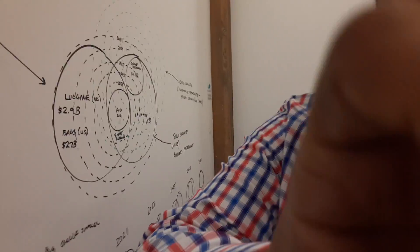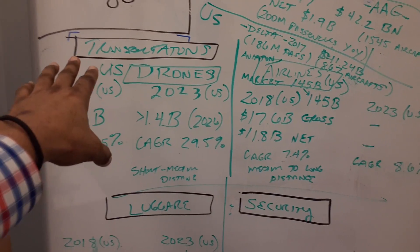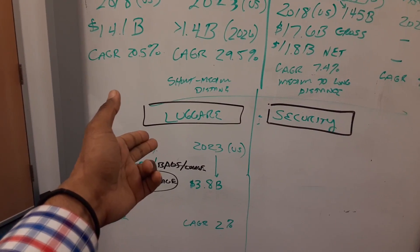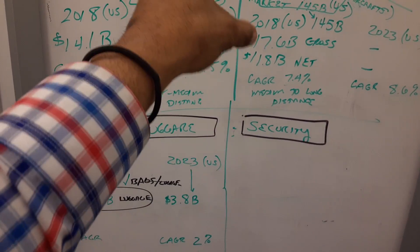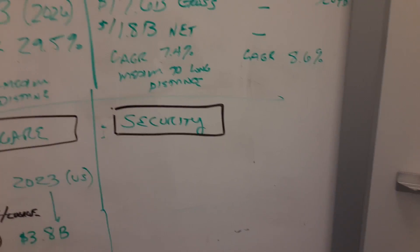We're going to start with looking at the numbers. We narrowed it down to transportation as one of the key categories, then luggage and security. Those are the three categories.